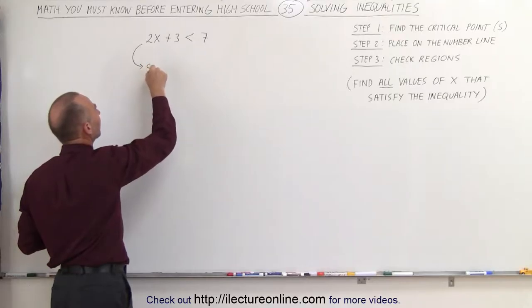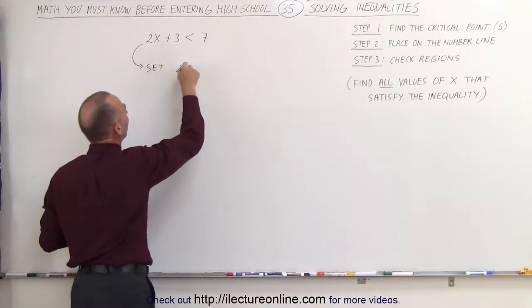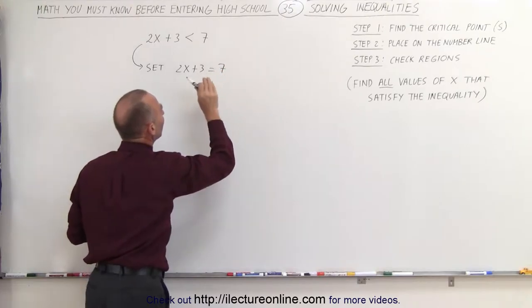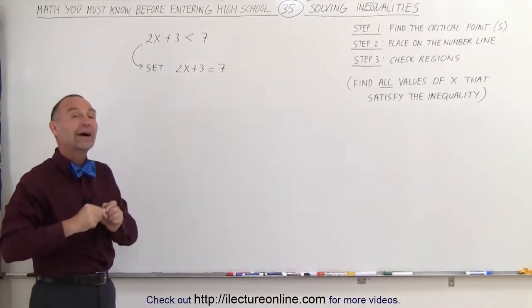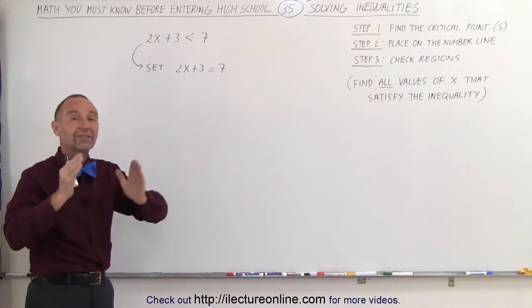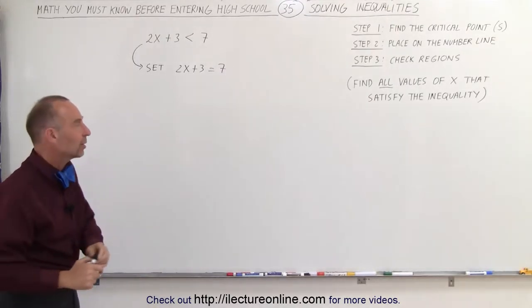So we're going to set 2x plus 3 equal to 7 and solve that equation. That will give us the critical point, the dividing line between the region where x satisfies the inequality and x does not satisfy the inequality.